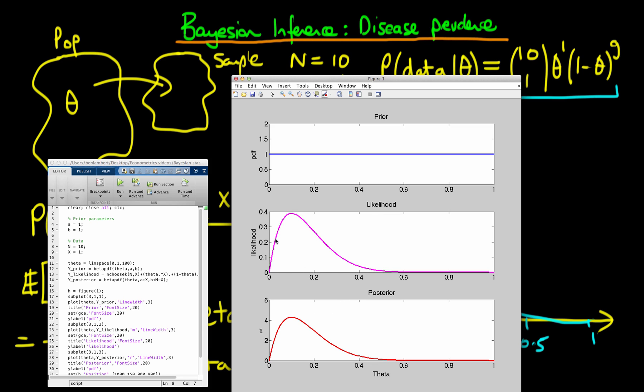But note that the likelihood isn't a valid probability distribution, this doesn't integrate to one, whereas the posterior always does. So in this particular example, we see that our distribution is peaked very near to probably about 0.1, 0.12 point in theta space.